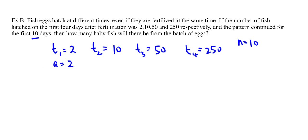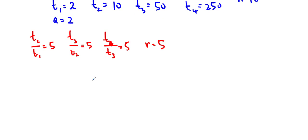So if we do a division, you can see t2 over t1 is equal to 5. And if you want you can check all of them. t3 divided by t2 is also 5. t4 over t3 is also equal to 5. So we know that r has to be equal to 5.